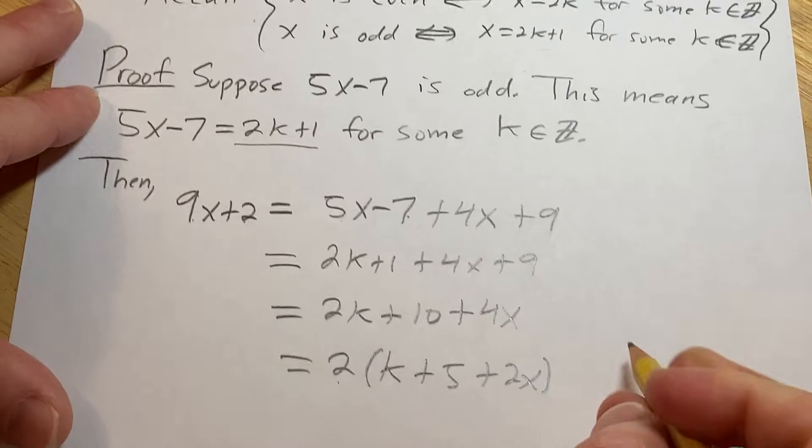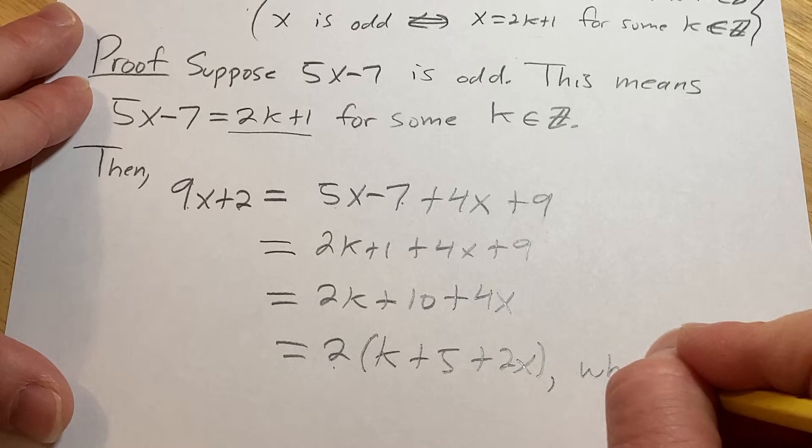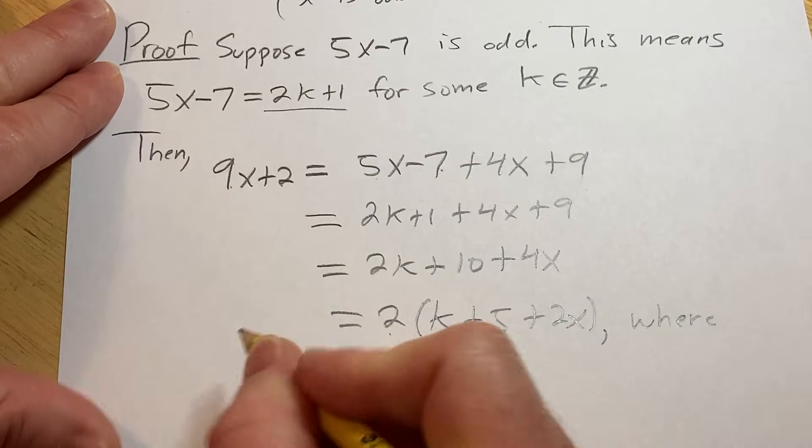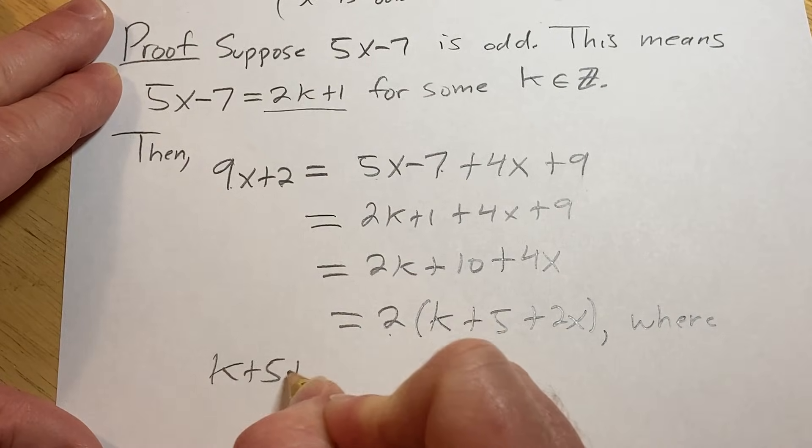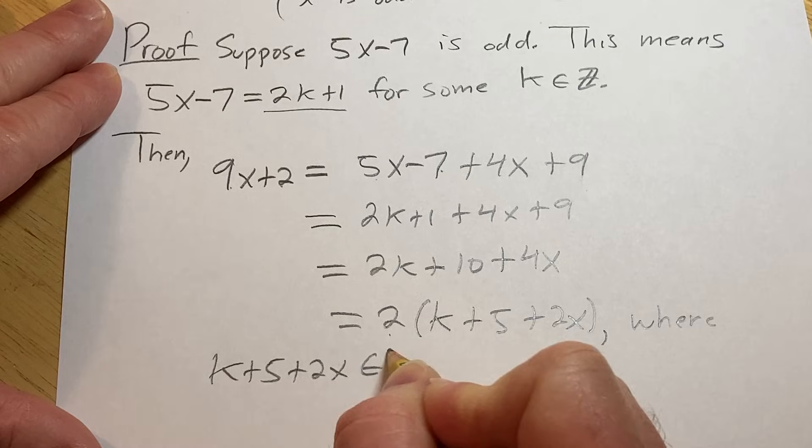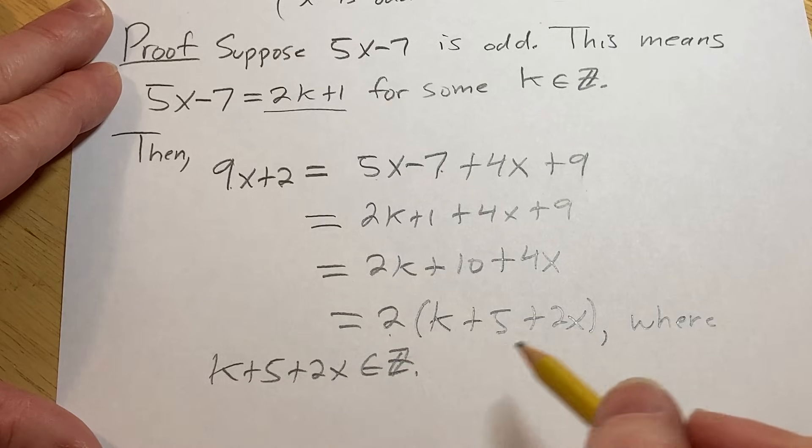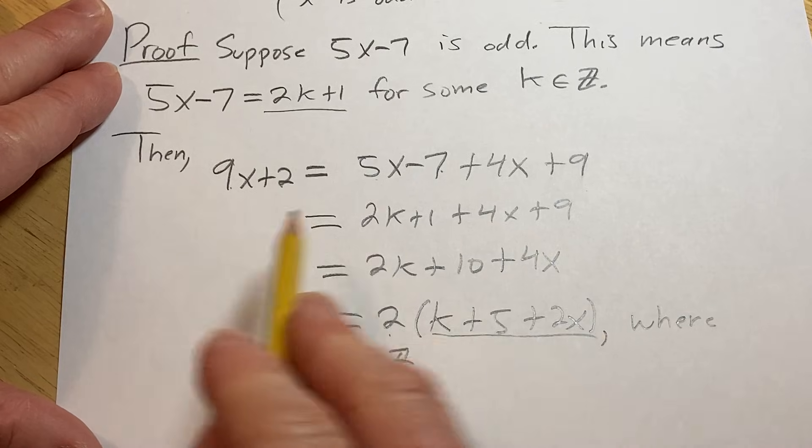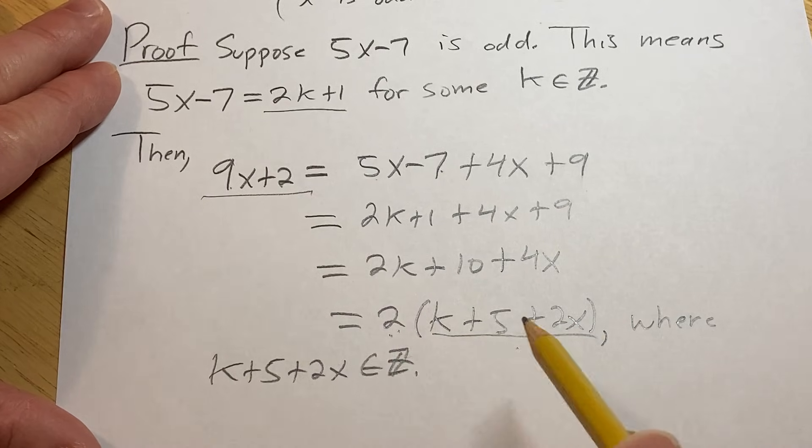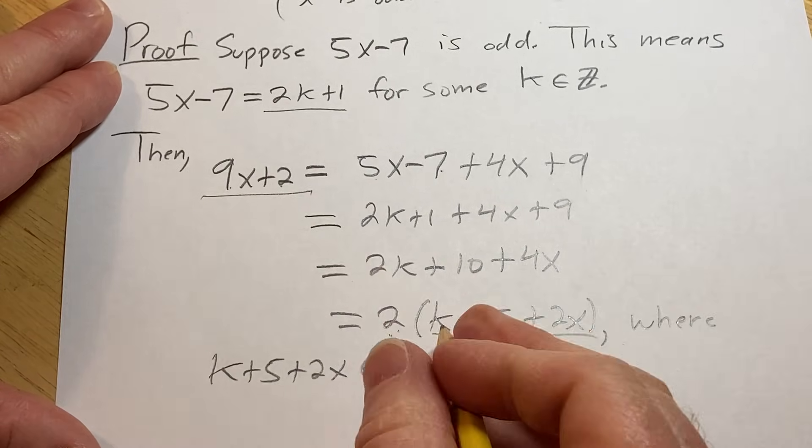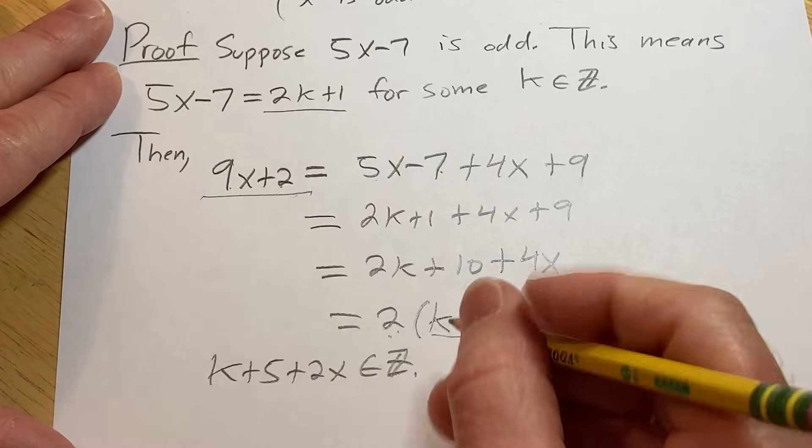So 2 times an integer. So we just have to say that this is obviously an integer. So k plus 5 plus 2x is in Z, right? Because the sum and product of integers is integers. So no issue, this whole thing is an integer. So we have that 9x plus 2 is equal to 2 times an integer. This is precisely what it means for 9x plus 2 to be even.